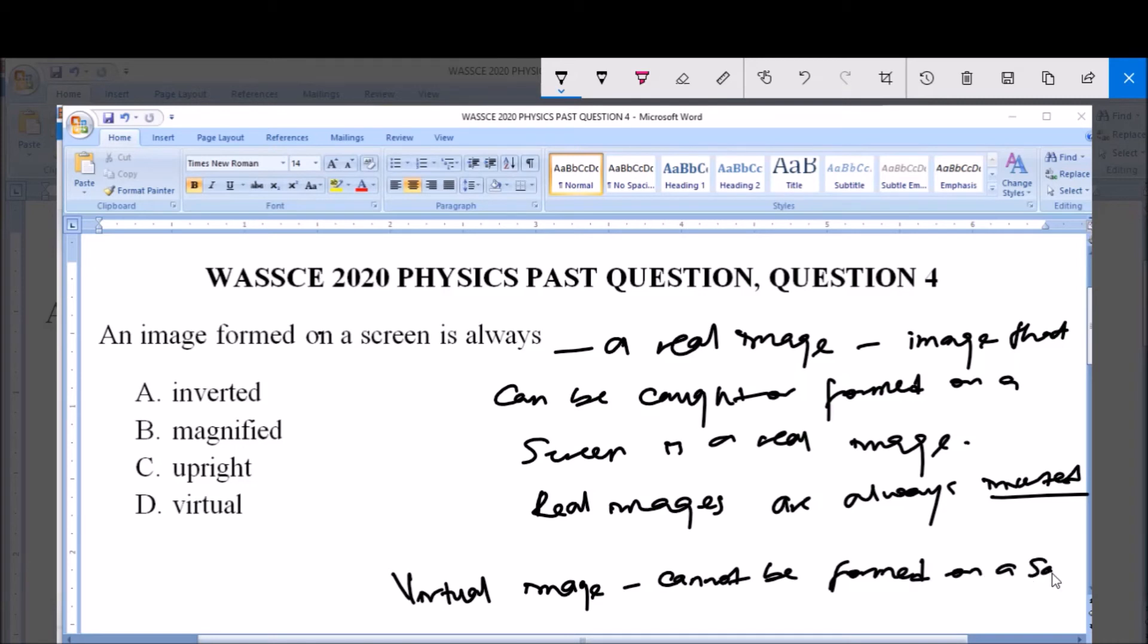So the answer to this question is option A, because images formed on the screen are real images and real images are always inverted. So the answer to this question is option A: inverted. Thank you, God bless you, and subscribe to our channel for more videos.